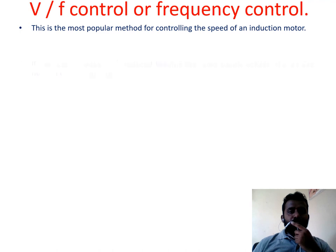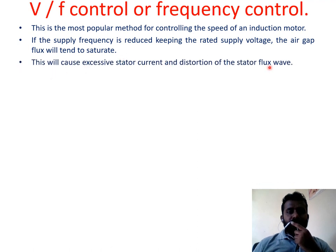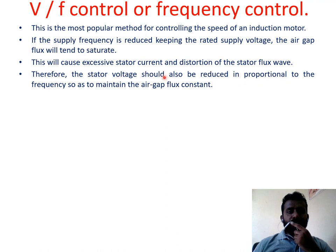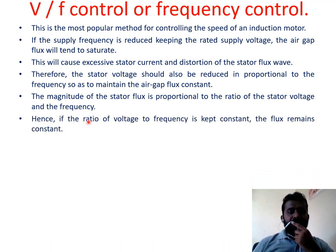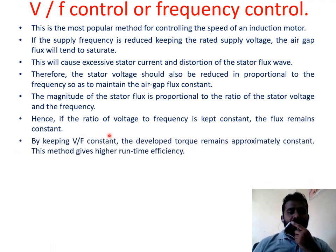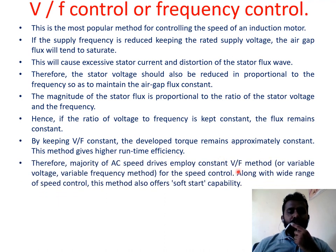V/F control or frequency control is the most popular method of controlling the speed of an induction motor. If the supply frequency is reduced while keeping the rated voltage, the air gap flux will tend to saturate, causing excessive stator current. Therefore, stator voltage should be reduced proportionally to the frequency to maintain constant air gap flux. By keeping V/F constant, torque remains approximately constant and higher run-time efficiency is achieved. This method also offers a soft start capability.